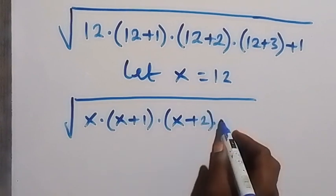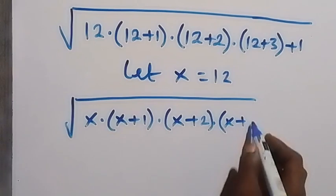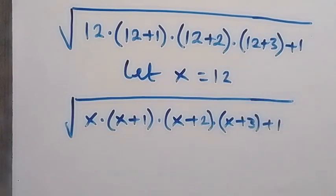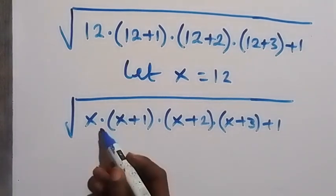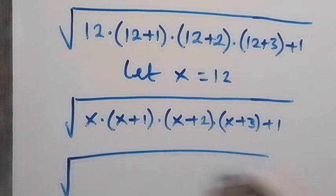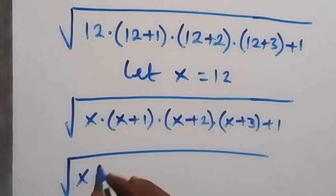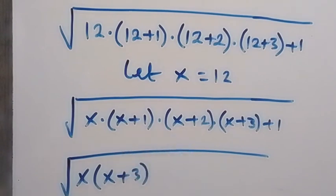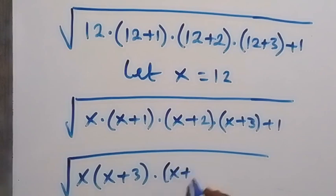Multiplied by x plus 3, then plus 1. In the next step, let's bring x and x plus 3 together, so we have the square root of x multiplied by x plus 3, then bring x plus 1 and x plus 2 together, times x plus 1 times x plus 2.